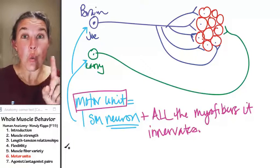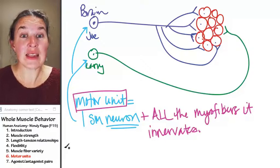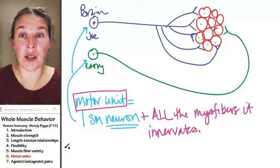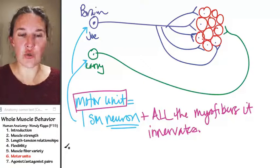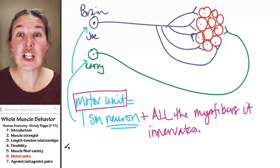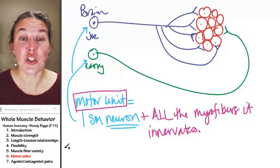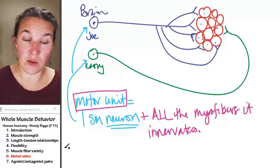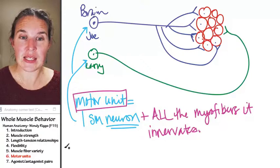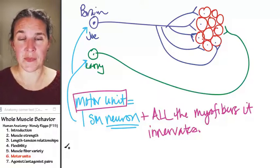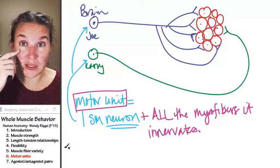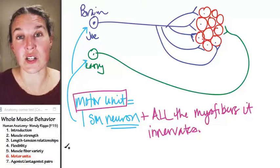So one message from the neuron to the thigh muscle is going to say 500 of you are contracting. One message from the neuron to the eyeball muscle is going to say 40 of you guys are contracting.